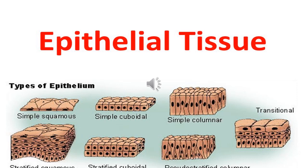Coming over to the types of epithelium, that is the simple type. In the first diagram you see simple squamous epithelium. Then the second one is simple cuboidal — they are composed of cuboidal cells. Then the columnar or pyramid-like cells — these are the simple columnar cells.